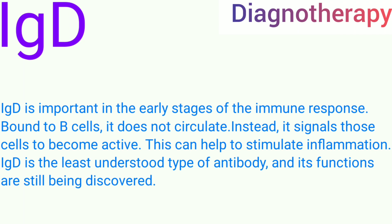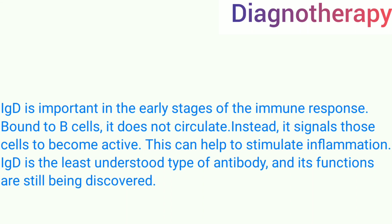IgD is important in the early stage of the immune response. Bound to B cells, it does not circulate. Instead, it signals those cells to become active, which can help to stimulate inflammation. IgD is the least understood type of antibody and its functions are still being discovered.